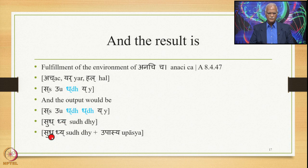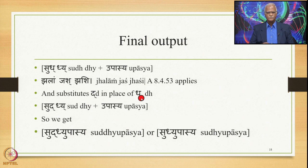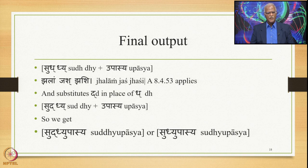The reduplicated form is optionally Suddhyya Upasya. Then Sutra 8.4.53 (Jalam Jash Jashi) applies and substitutes Dha in place of the first Dha, giving Su, Dha, Dha, Yer, Upasya — that is Suddhyya Upasya. Or optionally without reduplication: Su, Dha, Yer, Upasya — Sudhyya Upasya. These are the two forms finally generated, and in their derivation Sthanivat Bhava plays a very crucial role.